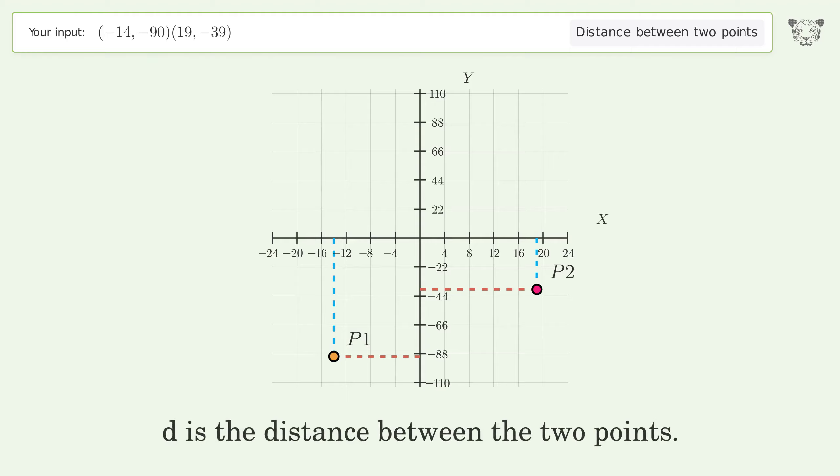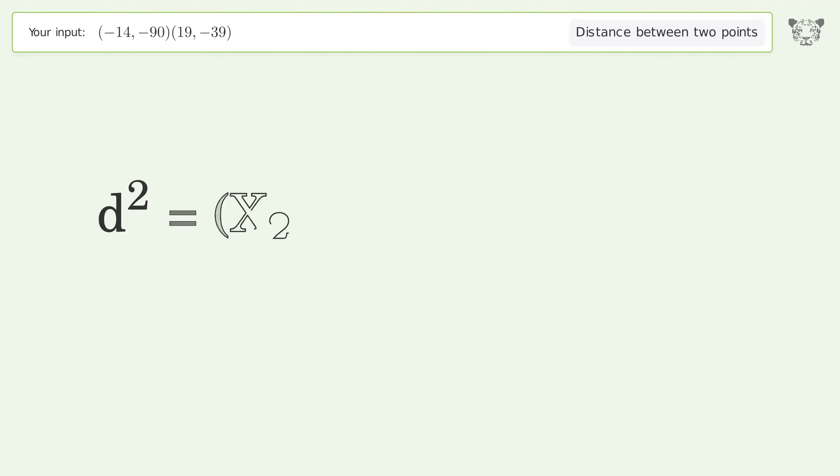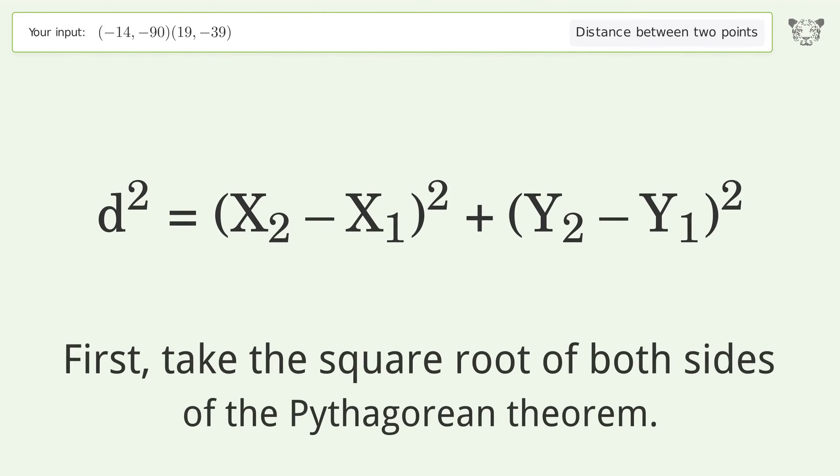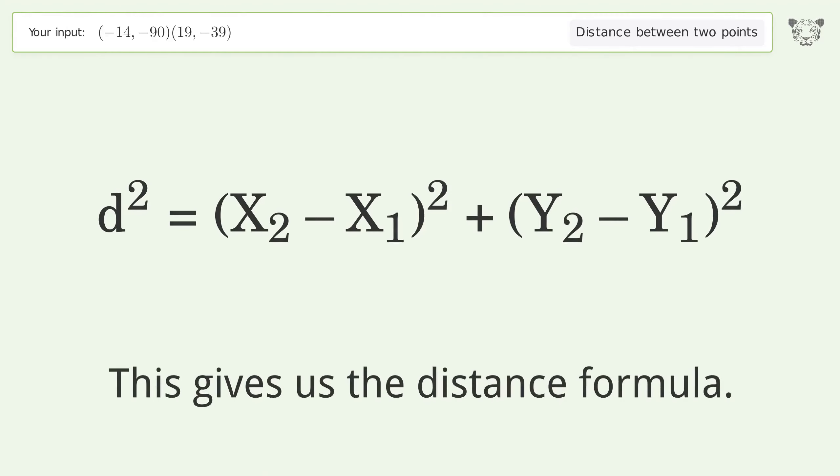d is the distance between the two points. First, take the square root of both sides of the Pythagorean theorem. This gives us the distance formula.